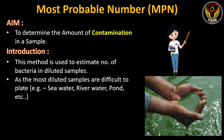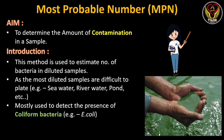Since water bodies have very large quantities of water, if we estimate the number of bacteria by taking a sample from only one spot, it will not give the appropriate number of bacteria in the water body, because the bacteria count on the bank side will differ compared to the center of the pond. So to estimate the approximate number of bacteria in a water body, we use the Most Probable Number technique.